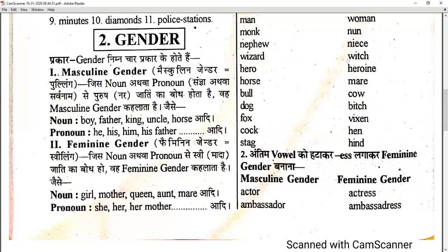Then we move to the feminine gender. Feminine is basically what we refer to as female. For nouns: boy becomes girl, father becomes mother, king becomes queen, uncle becomes aunt, horse becomes mare. For pronouns: where there was he, the feminine is she; his becomes her; him becomes her; his father becomes her mother.